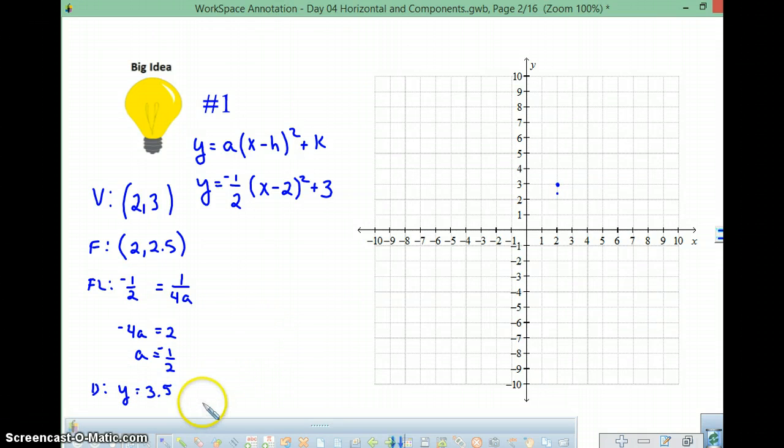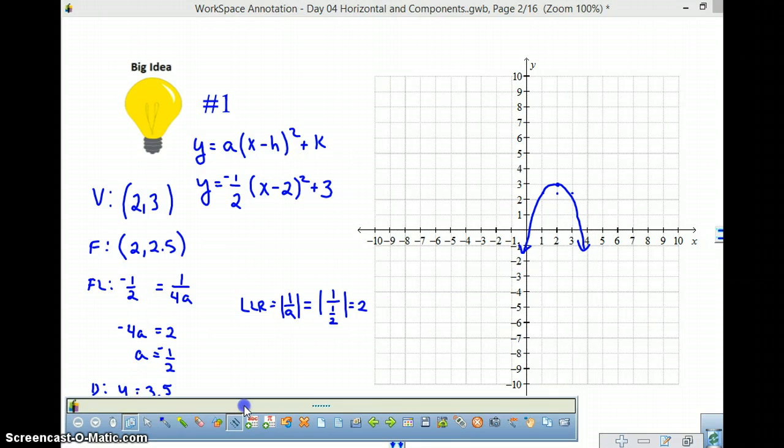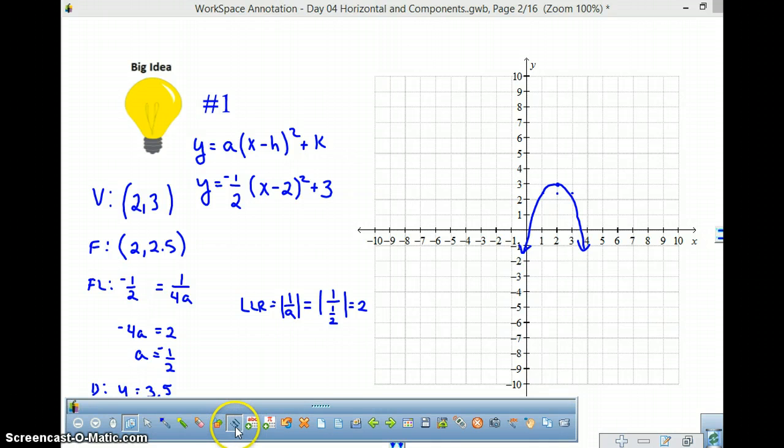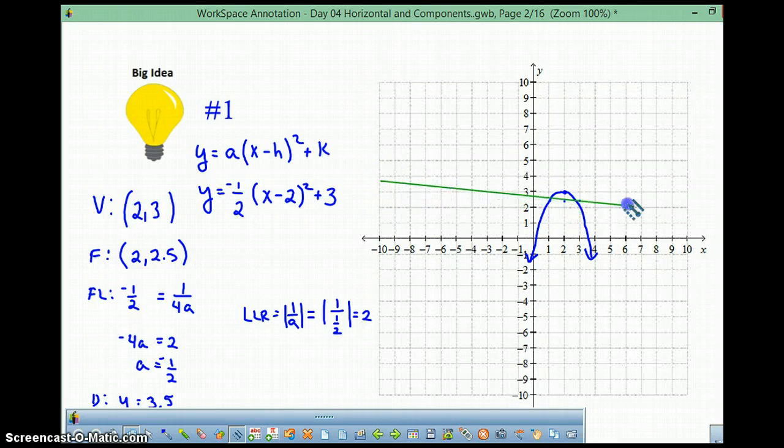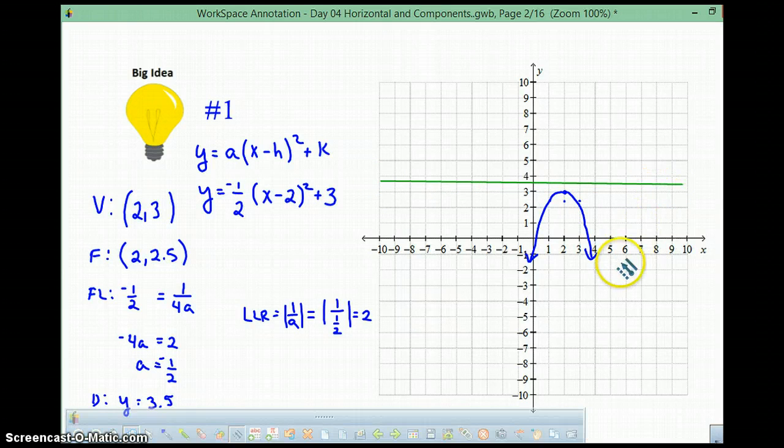All right. What about length of the lattice rectum? Well, the LLR is equal to 1 over a, the absolute value of that. So that would be the absolute value of 1 over 1 half, which equals 2. So we'll go 1 on either side here, and that will allow us to make a nice parabola. And we can go ahead and put our directrix in as well. The directrix is going to go in at y equals 3.5.